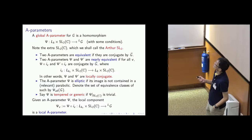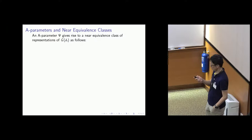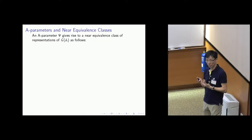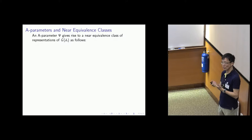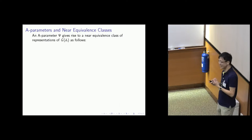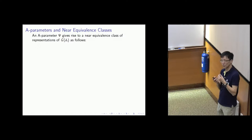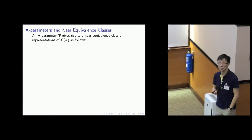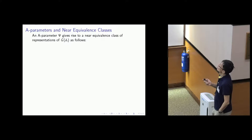So this was where we were. I define a global A parameter as well as a local A parameter. And of course the problem was we're still trying to answer this question: how to decompose the automorphic discrete spectrum. We consider a weaker equivalence relation known as near equivalence, group things which are nearly equivalent together. The problem is broken into two parts: to have a meaningful indexing of the near equivalence classes, and then for each near equivalence class to describe its internal structure precisely. A parameters are designed to solve these problems.